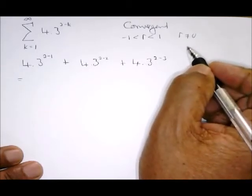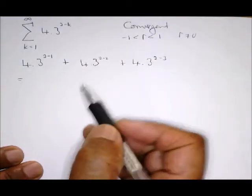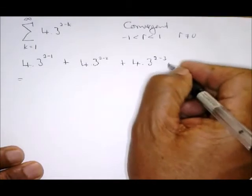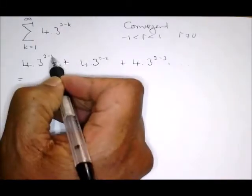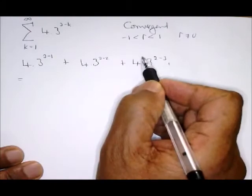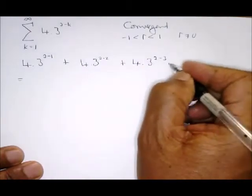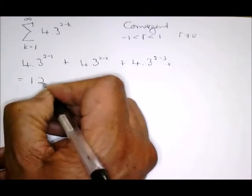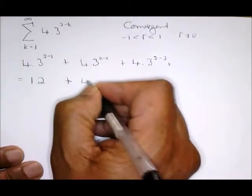The only way to do that is to at least find the first three terms. So the first term, k is one, then k is two, then k is three, and so on. And if you simplify this using a calculator, you should get 12 there, a 4 there, and a 4 thirds there.